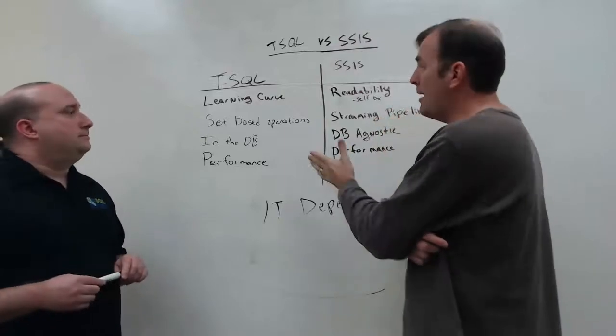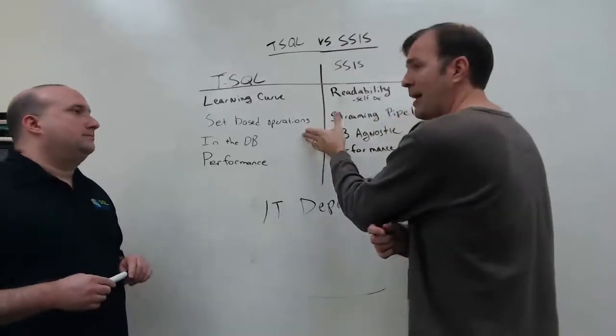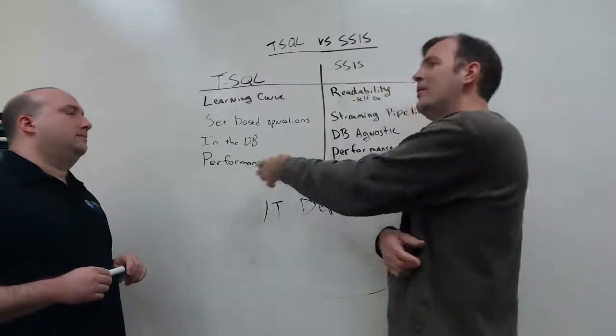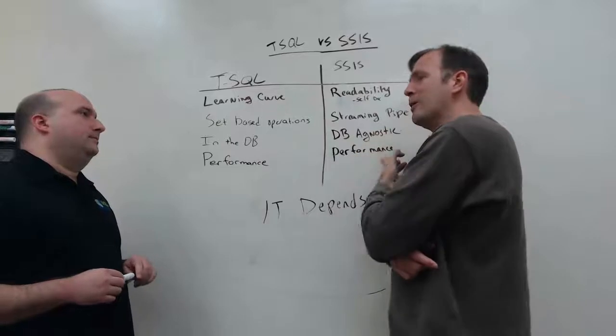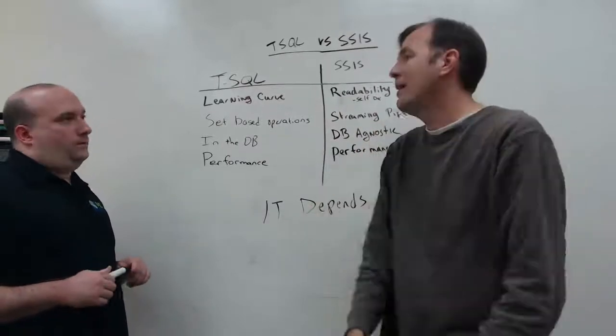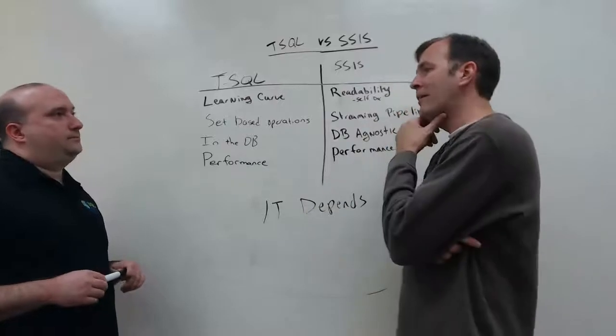As you're reading data out of the source, maybe in SSIS, you do your joins, you do your order bys in the OLE DB source, reading it out, streaming it out already transformed, and then you do some additional transformations. Maybe you land it in the database. Maybe it's combining all the solutions together.